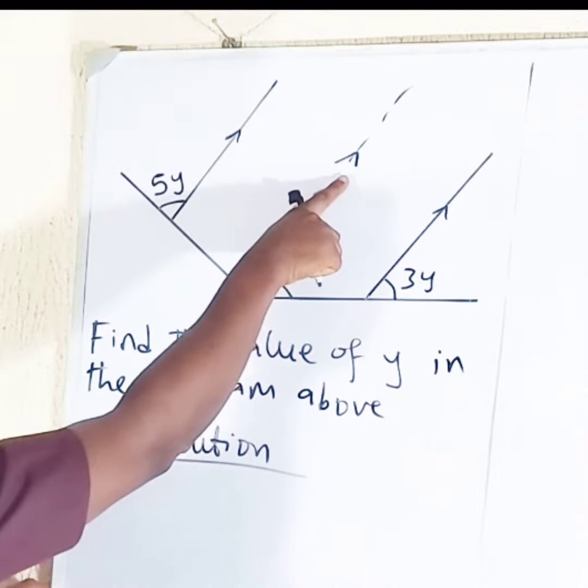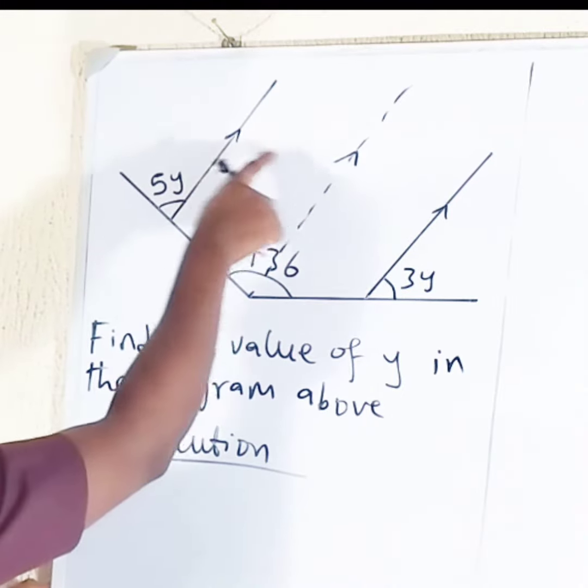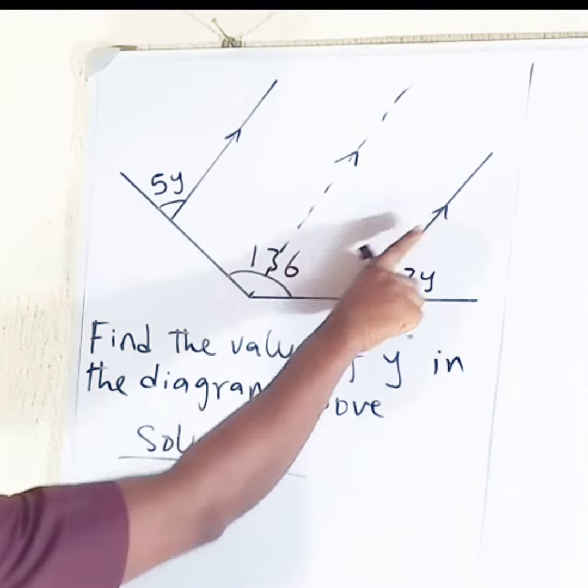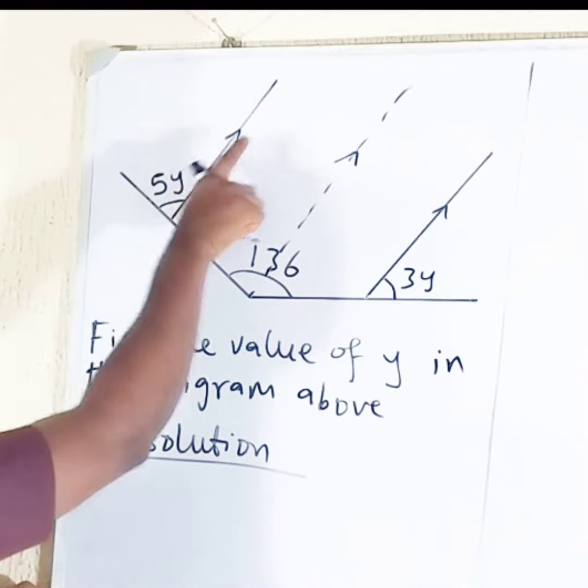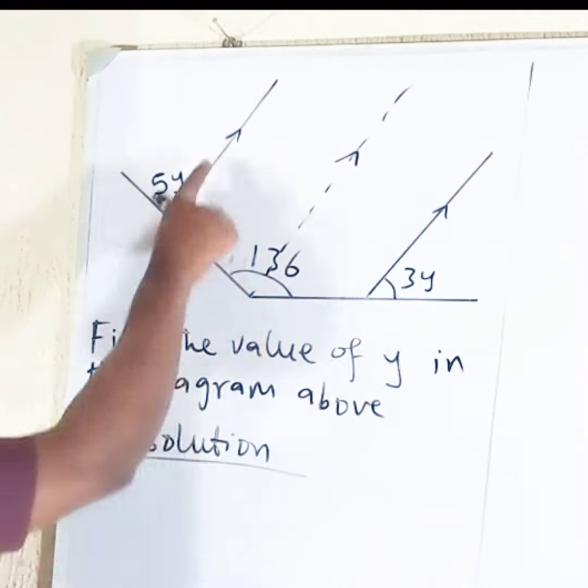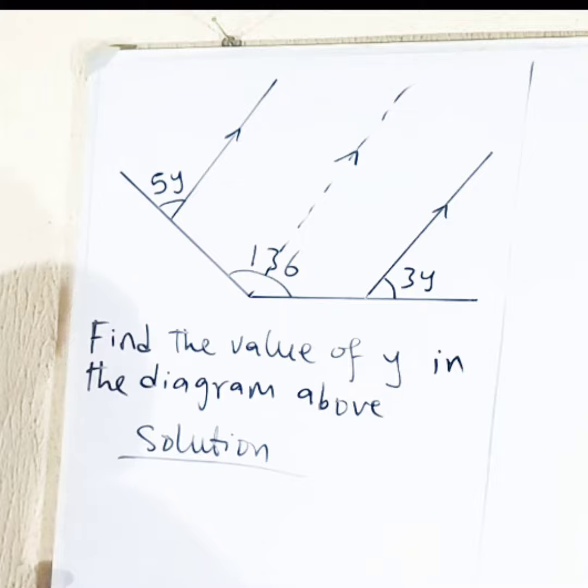So this line is parallel to these two lines. Of course, you know that this arrow and this arrow means that these two lines are parallel. The three of them are parallel to each other.